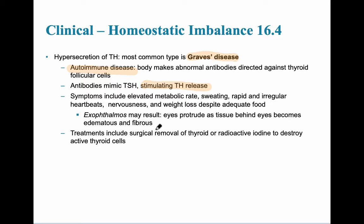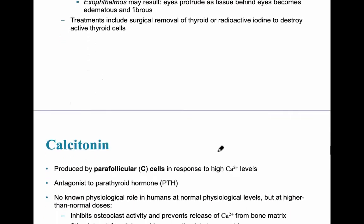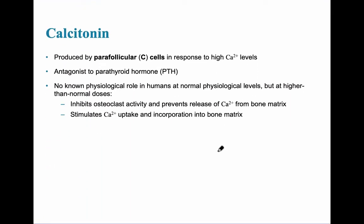Make sure you know the homeostatic imbalances related to the thyroid gland. In addition to Graves' disease, cretinism is also a form of hypothyroidism due to inadequate production of thyroxin. The thyroid gland not only produces thyroid hormone but also produces calcitonin. Calcitonin's main job is to reduce blood calcium concentration. There are two groups of cells in the thyroid: follicular cells and parafollicular cells. The parafollicular cells secrete calcitonin, which is the antagonistic hormone to parathyroid hormone, having the opposite effect.